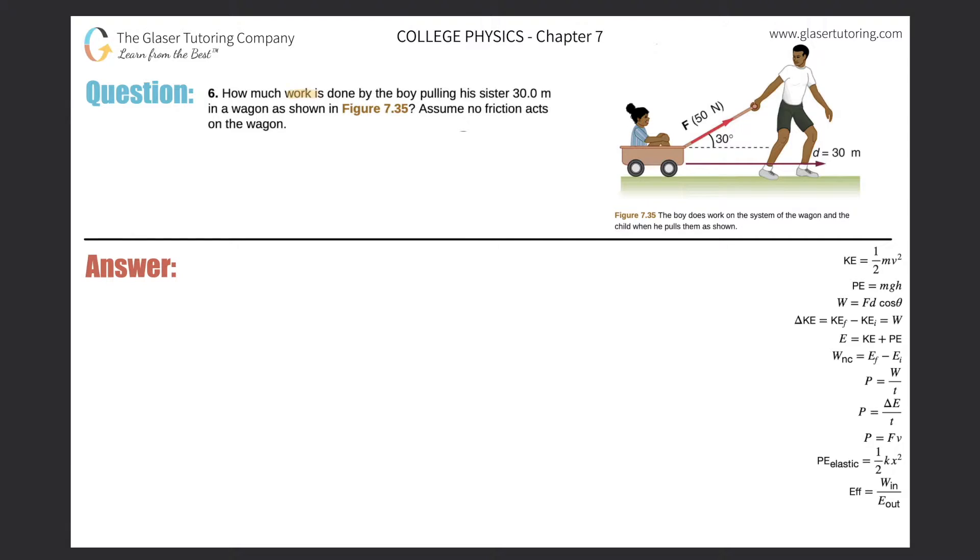Number six: How much work is done by the boy pulling his sister 30 meters in a wagon as shown in Figure 7.35? Assume no friction acts on the wagon. So here we have our picture right over here.